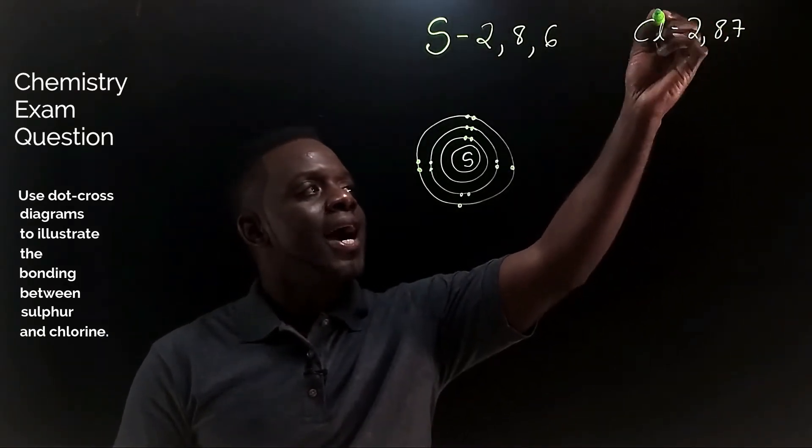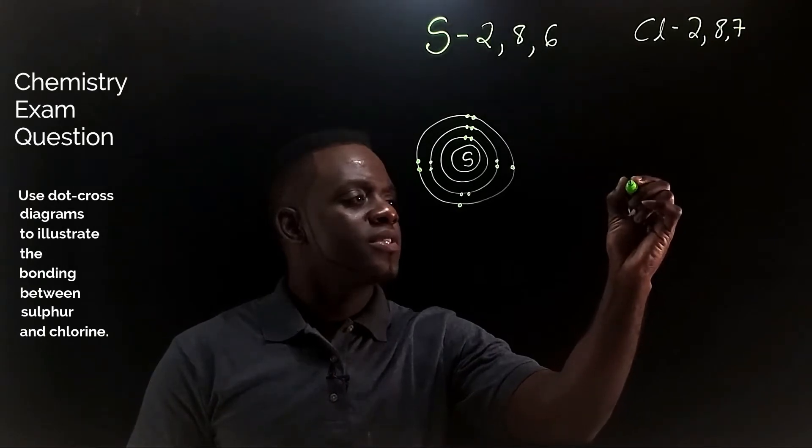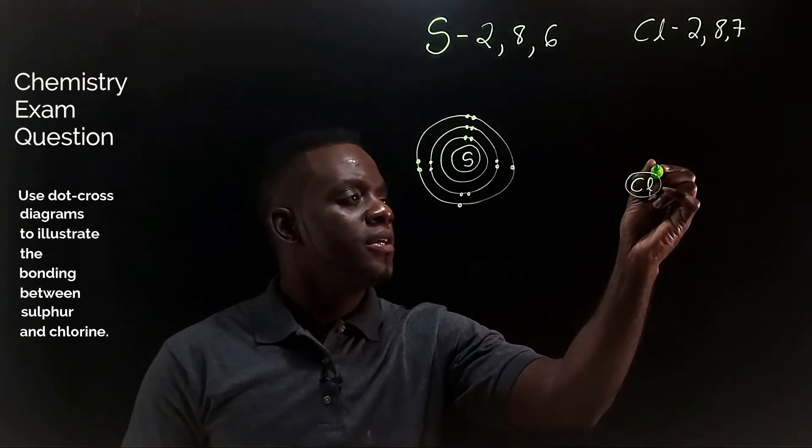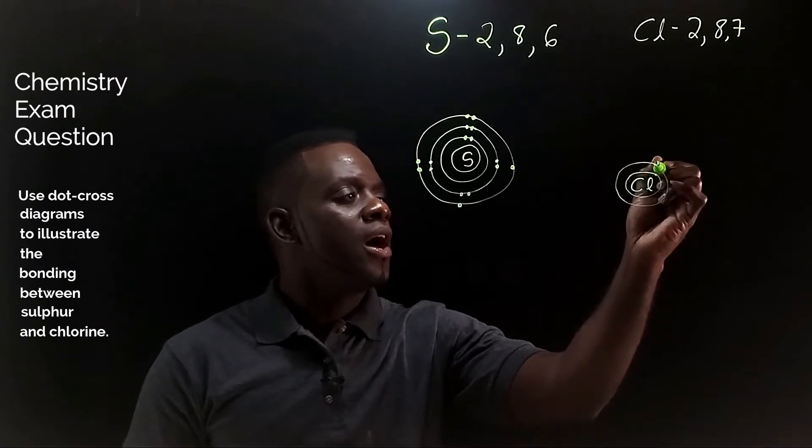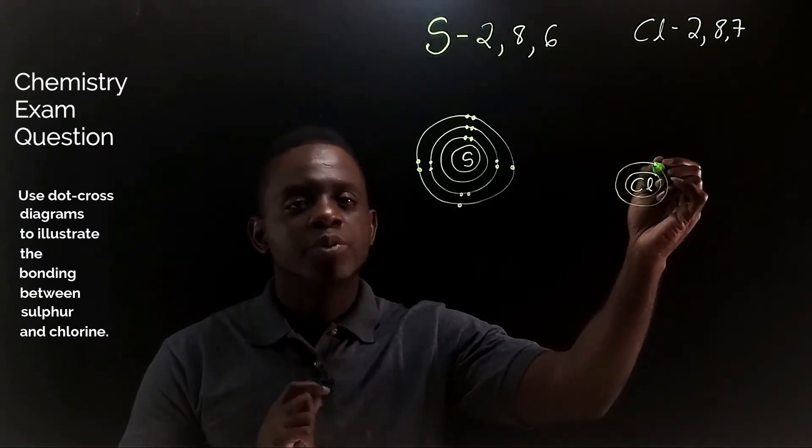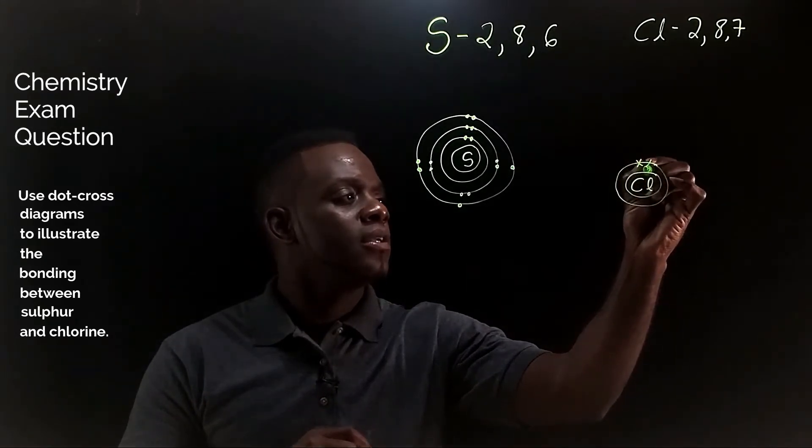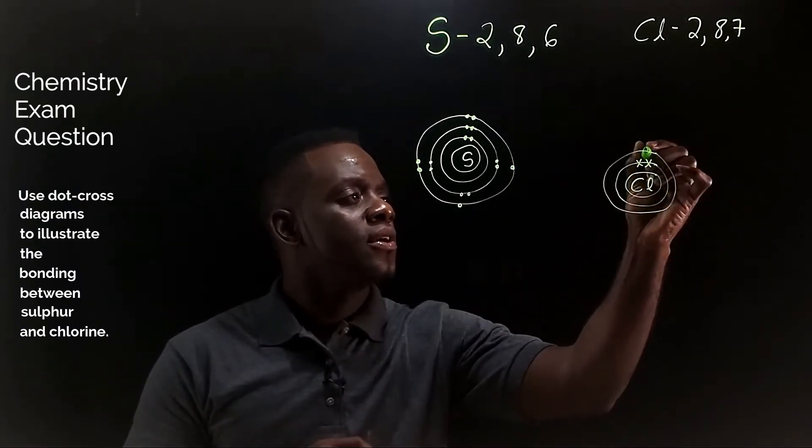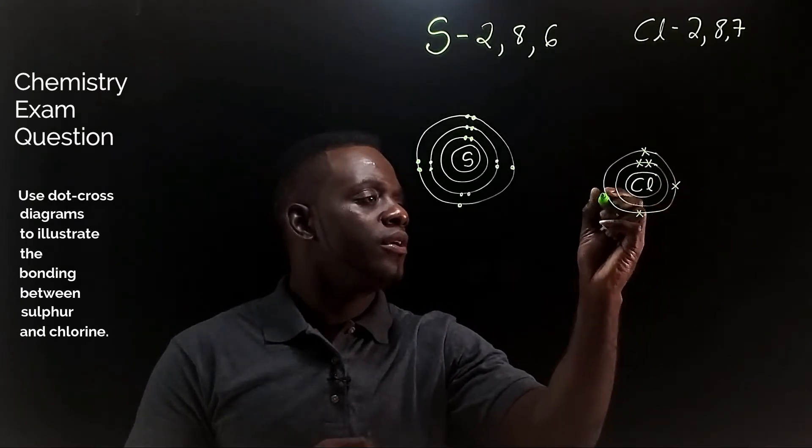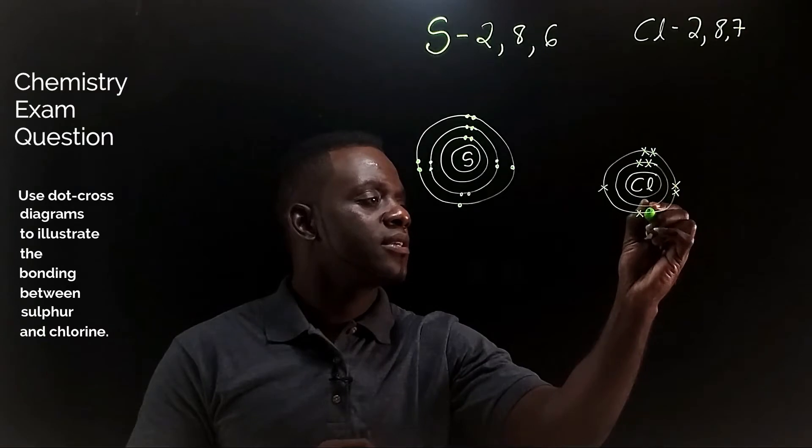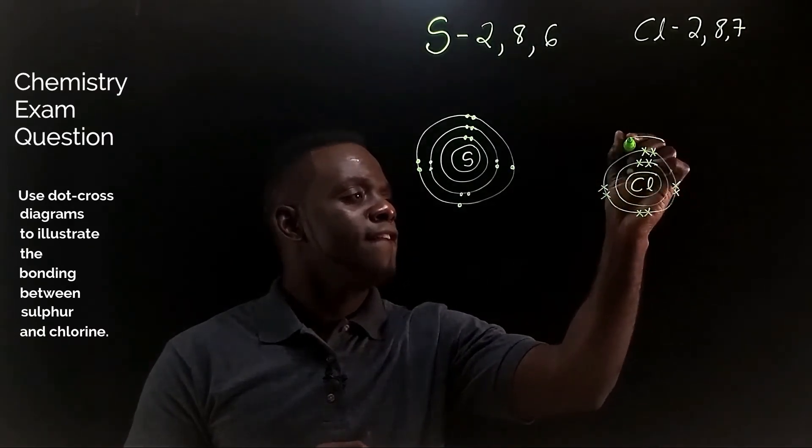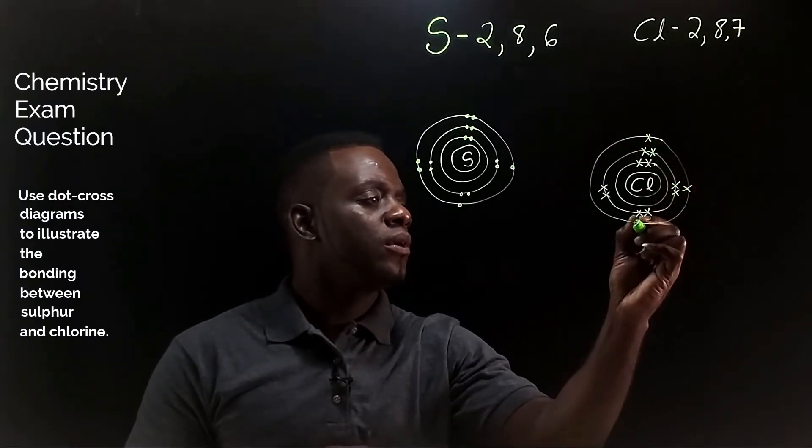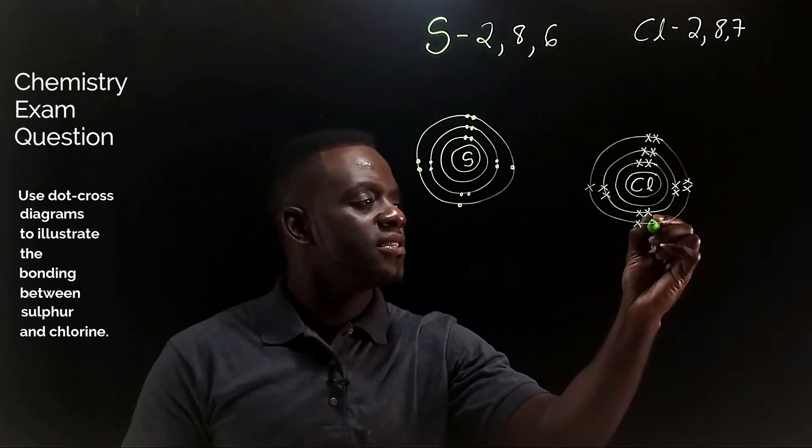Now let's draw the atom for chlorine. I will use Cl, the symbol for chlorine. The first circle represents the nucleus, the second circle is the first shell. On the chlorine, the electrons will be represented by cross. Now we'll draw the second shell with eight electrons and the valence shell with the valence electrons, seven in total.